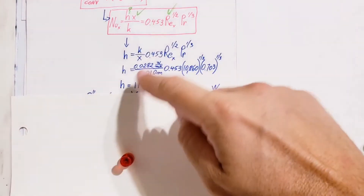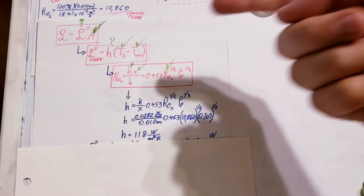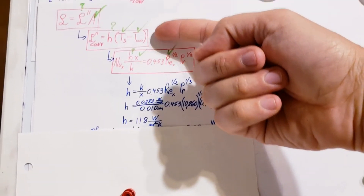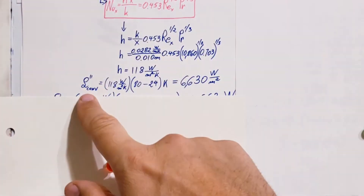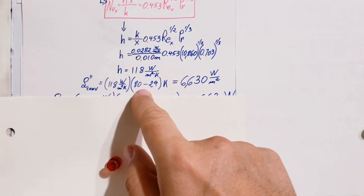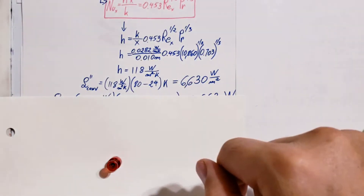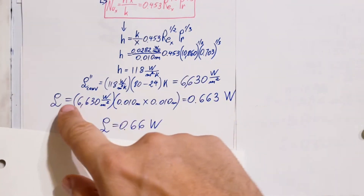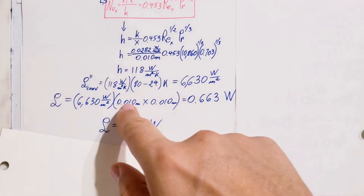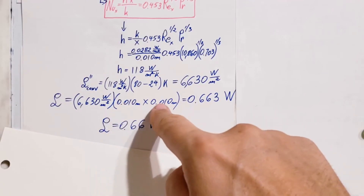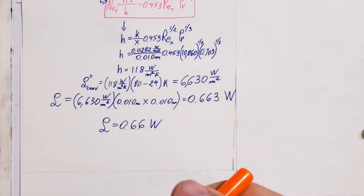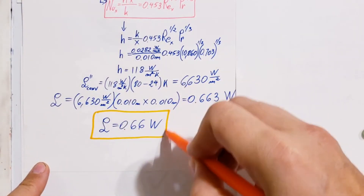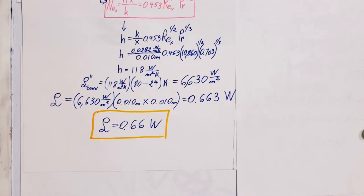Now that we found H, we go back to the convection flux formula. Plugging in H = 118, and the temperature difference of 80 minus 24 Kelvin, we get a flux of 6630. Then using Q equals flux times area, with the chip area of 10 millimeters by 10 millimeters converted to meters, we find Q = 0.66 watts. This is the maximum power allowed in the chip; otherwise it will overheat and exceed 80 degrees Celsius.